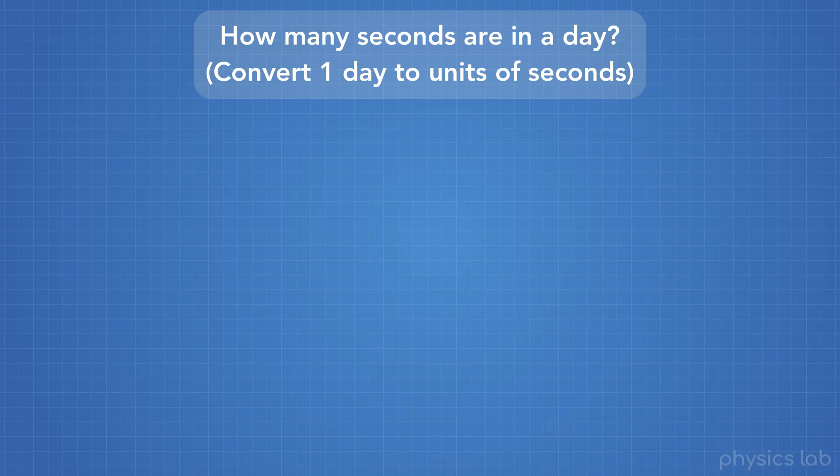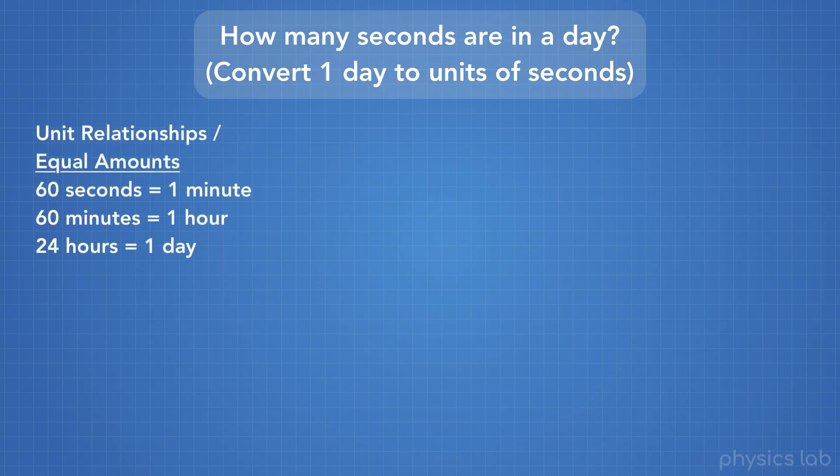So first, in order to convert between units, you need to know what the relationships are between the units that you're working with. You might know these off the top of your head, or they might be given to you. In our case, we know that 60 seconds equals one minute, 60 minutes equals one hour, and 24 hours equals one day.